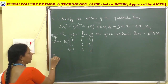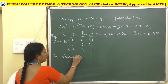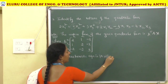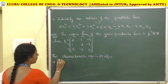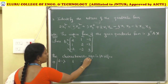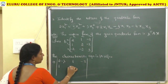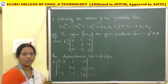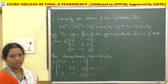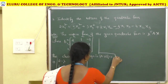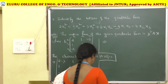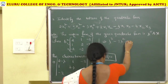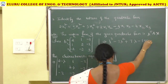The characteristic equation is det(A − λI) = 0, giving |2−λ, 1, −2; 1, 2−λ, −2; −2, −2, 3−λ| = 0. After evaluation, we get the equation λ³ − 7λ² + 7λ − 1 = 0.